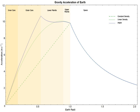The Preliminary Reference Earth Model is a one-dimensional model representing the average Earth properties as a function of planetary radius.